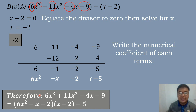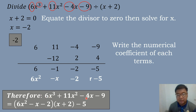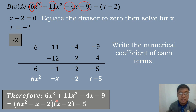Therefore, if we write it in division algorithm form, the dividend 6X to the third power plus 11X squared minus 4X minus 9 equals the quotient 6X squared minus X minus 2 times the divisor X plus 2, plus negative 5 which is the remainder.